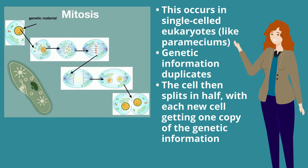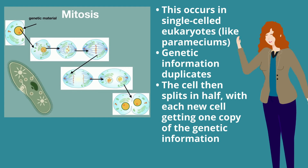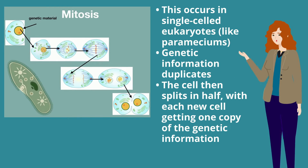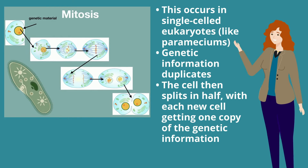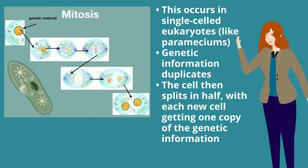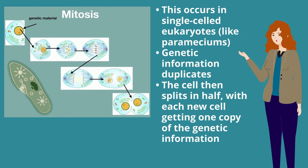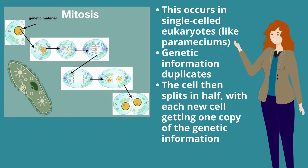In mitosis, this occurs in single-celled eukaryotes like parameciums. Again, genetic information duplicates. The cell then splits in half with each new cell getting one copy of the genetic information.